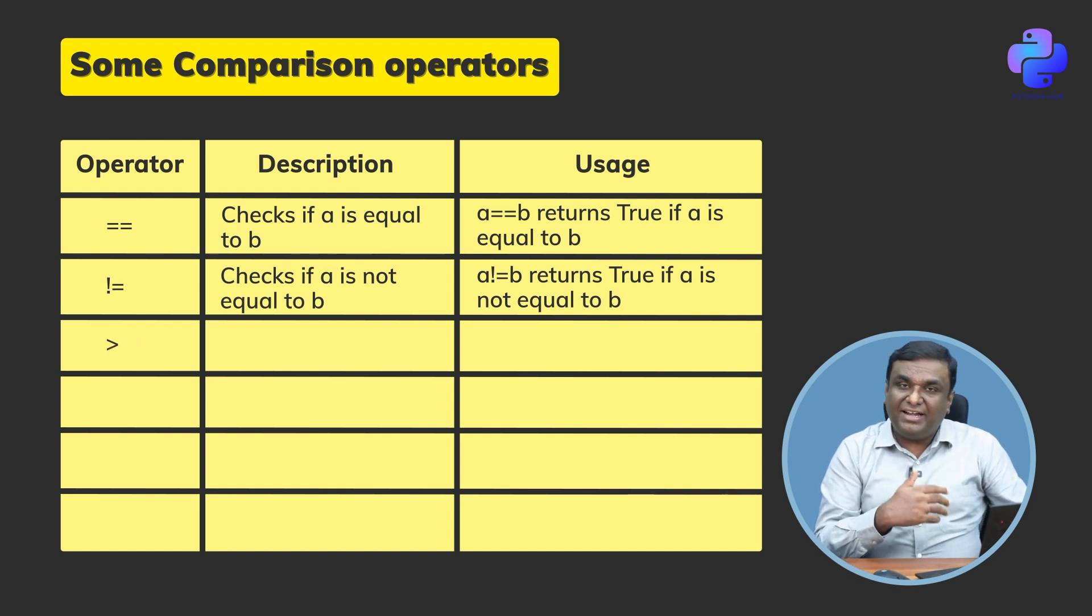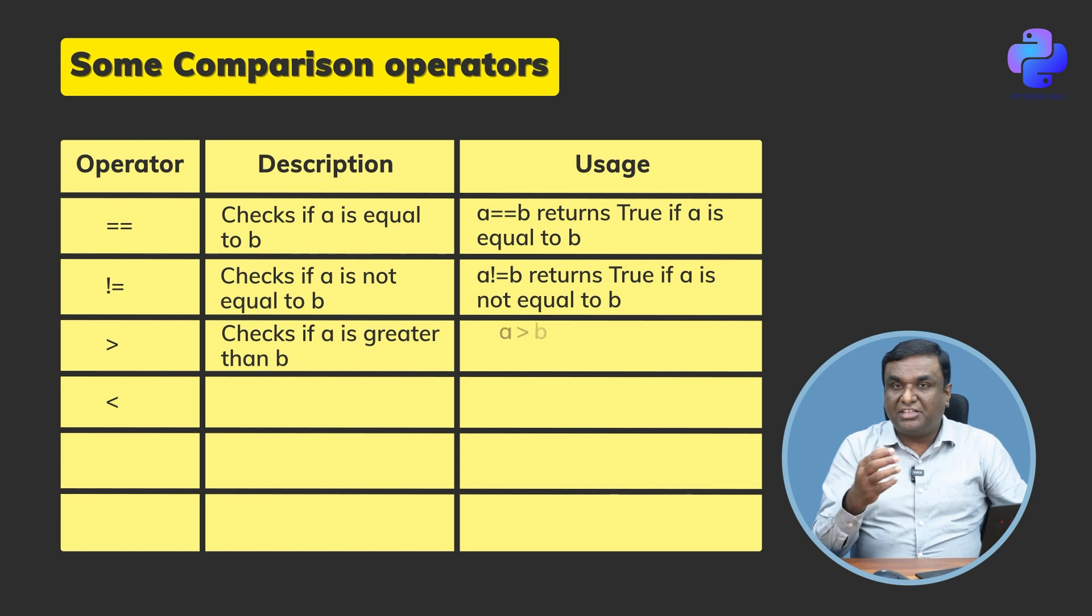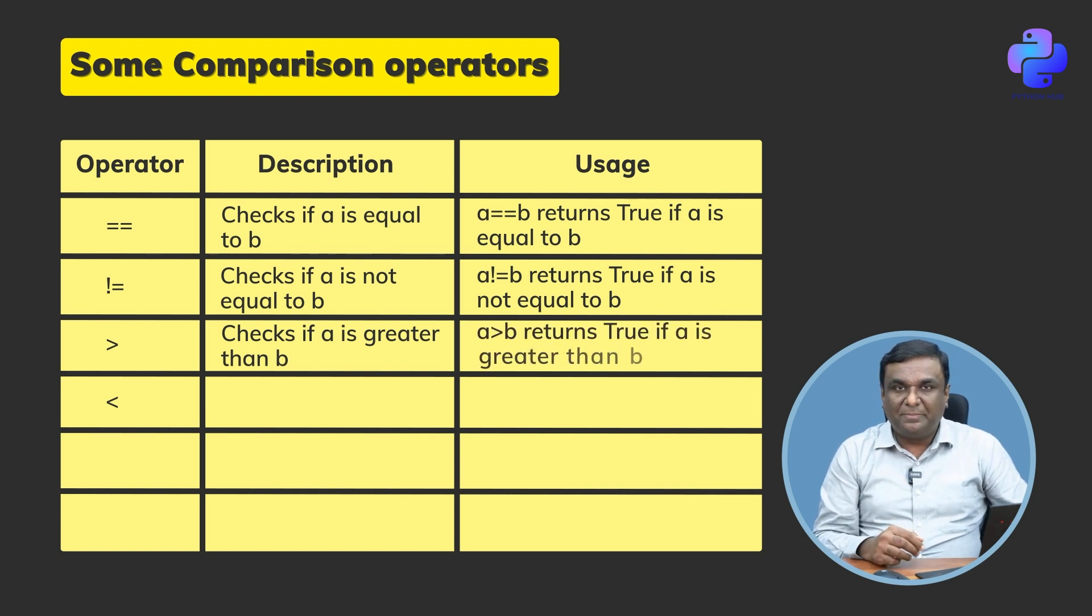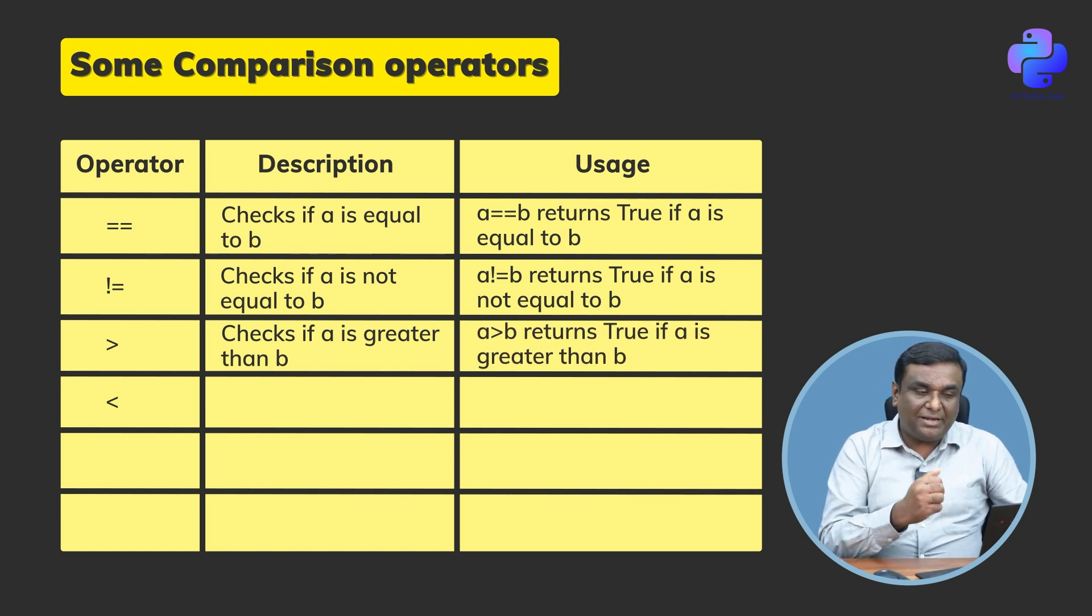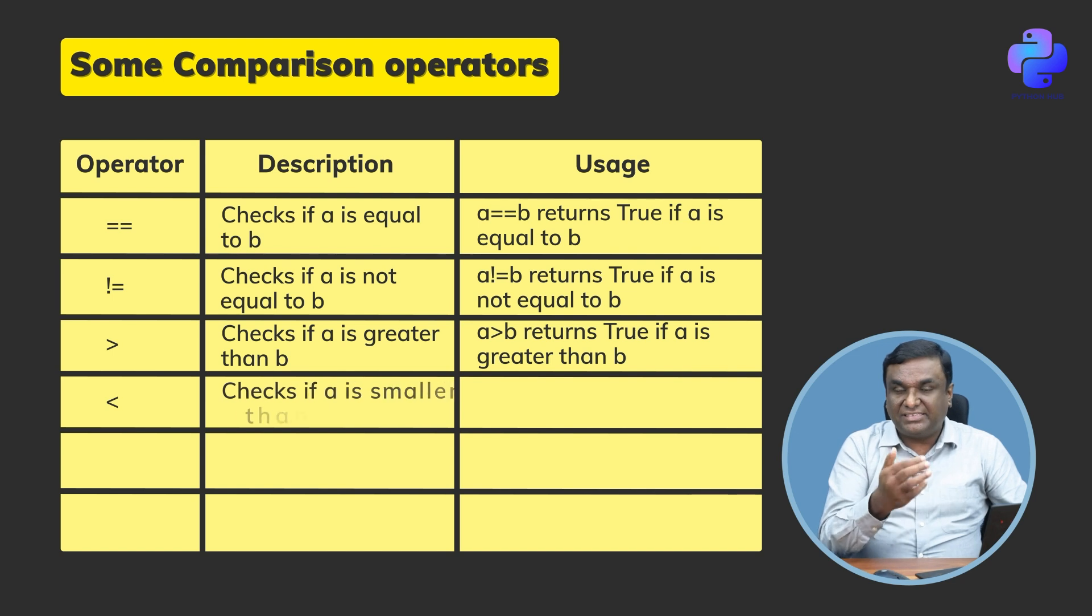We have greater than operator and lesser than operator. Greater than operator checks if a is greater than b. It returns true if a is greater than b.